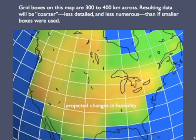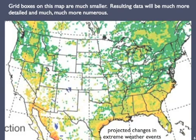Now, one key aspect of climate models is the scale over which the data are collected, analyzed, and presented. The grid on this map of North America — which, by the way, shows projected changes in humidity — is 300 to 400 kilometers on a side. Well, that doesn't allow for much detail or fine-tuning. The results will be much more generalized, much coarser, than if smaller boxes had been used, as they were in this map.